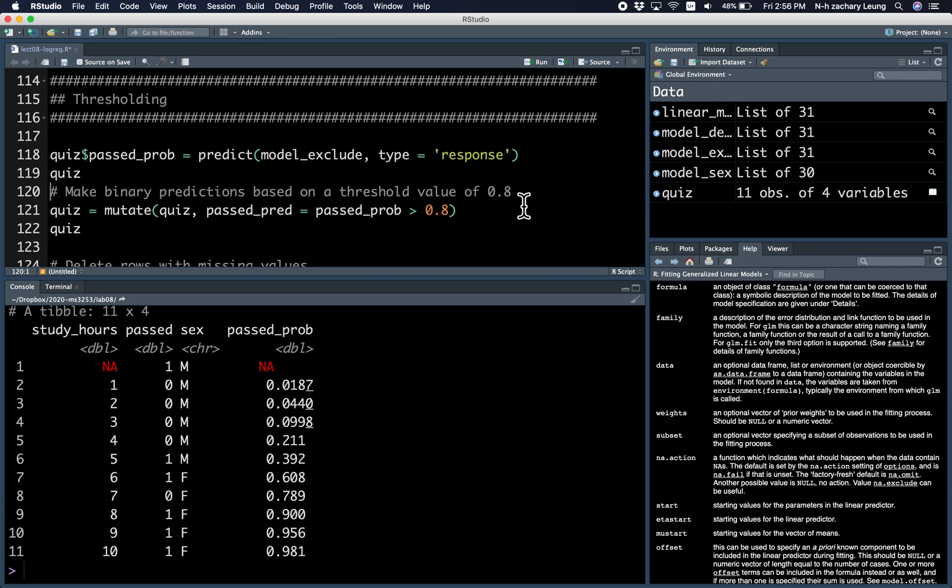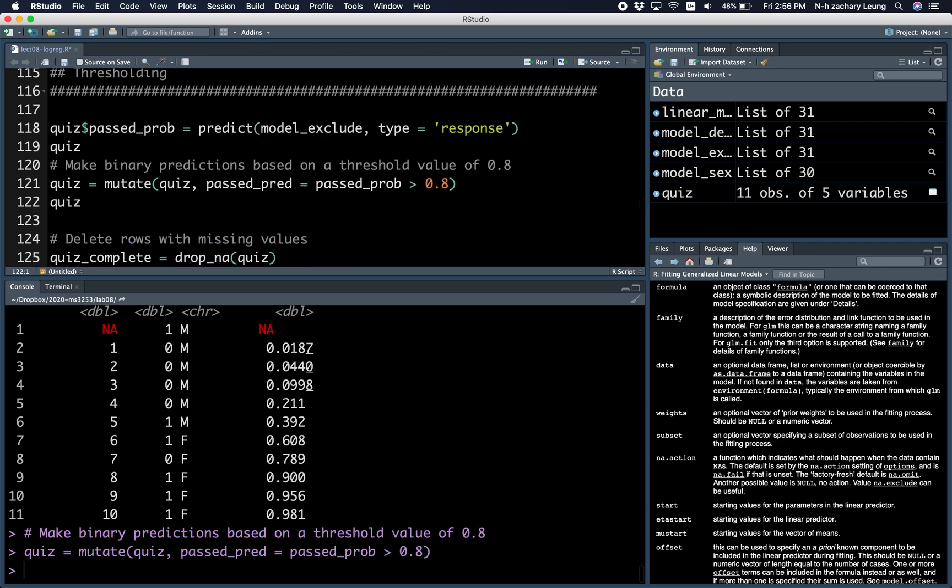Since failing is quite bad, let's choose a high threshold value. All of these with low probabilities would be false, and only these would be true.